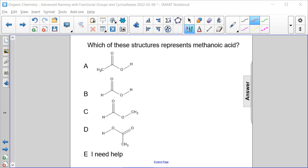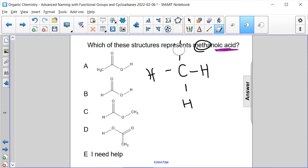Which of these structures represents methanoic acid? We have a parent chain that is methane. Methane is a single carbon, so a single carbon methane looks like this. Now methanoic acid means that we replace one of these hydrogens with a carbonyl group.